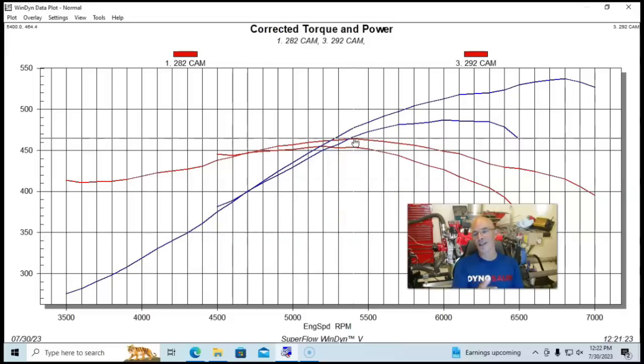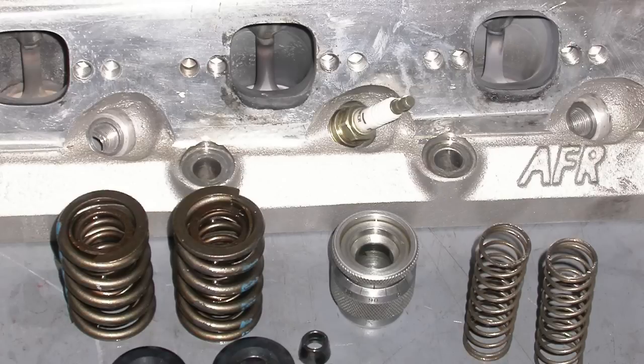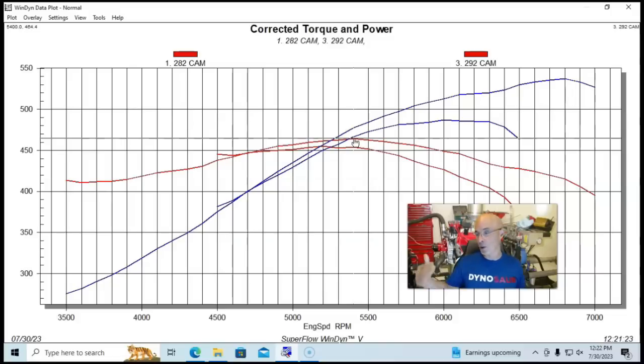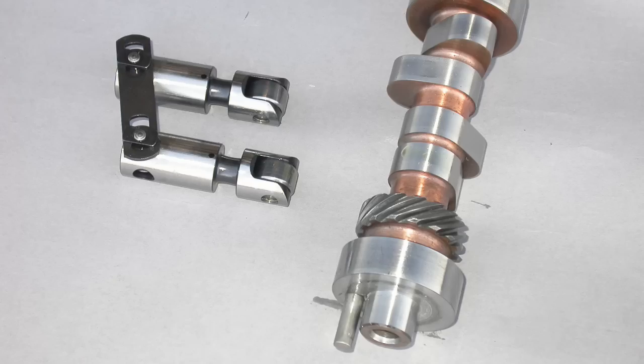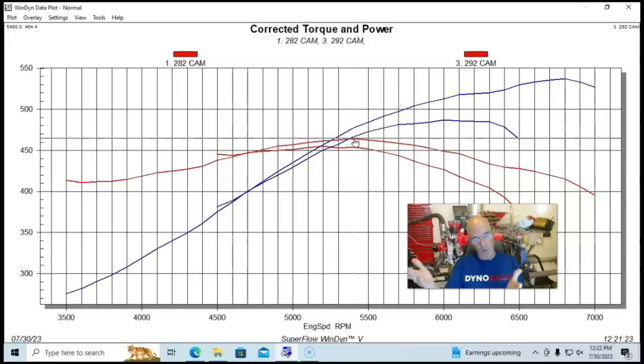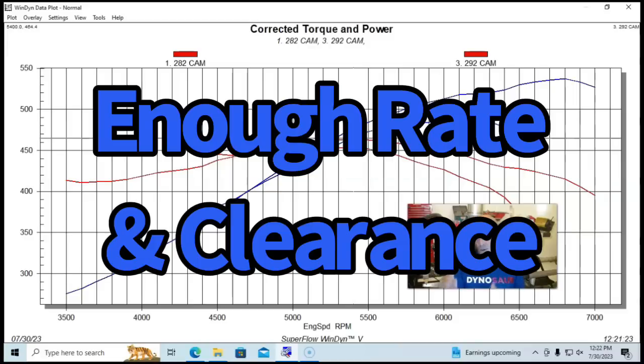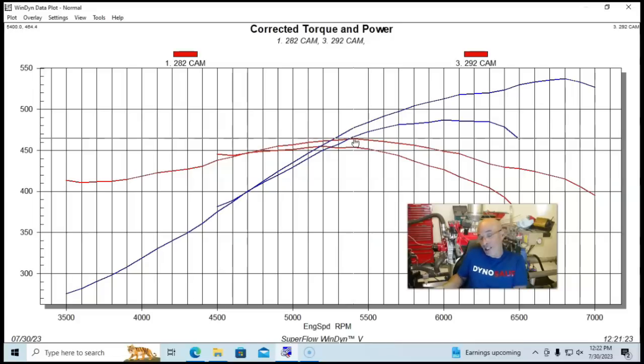I can tell you that we ran the same spring package on both of these combinations. We knew ahead of time that we were going to be putting in a 600 plus lift camshaft in this thing. So we put in springs accordingly. We put solid roller springs in this thing that had not only enough coil bind clearance for a 650 lift camshaft, but also enough spring rate to allow us to run at the RPM range than a camshaft that has 254 and 260 degrees of duration.